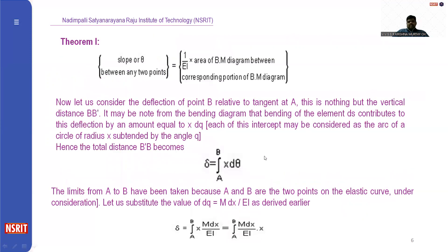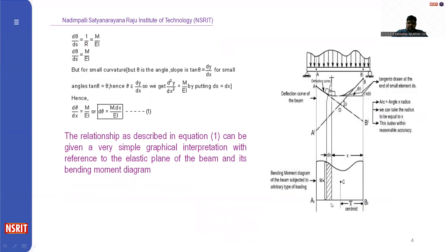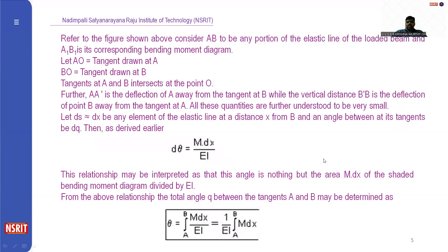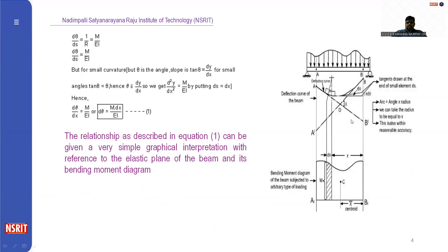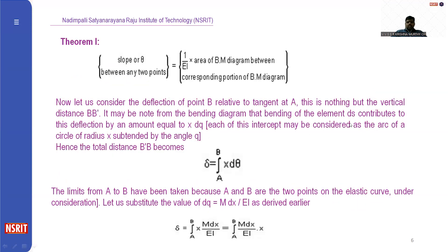Now let us consider the deflection of point B relative to the tangent at A. That is nothing but the vertical distance between P and P'. The element being considered is small, and ds contributes a deflection equal to x times d(theta). So the deflection delta equals the integral from A to B of x d(theta). Writing d(theta) as M dx/EI, delta equals the integral from A to B of x M dx/EI.